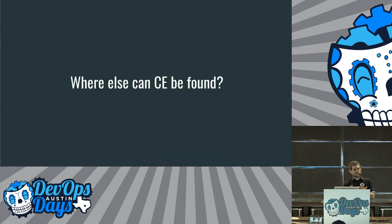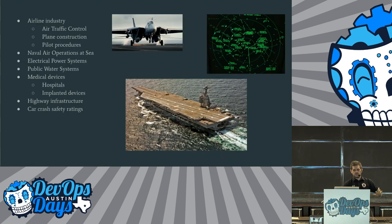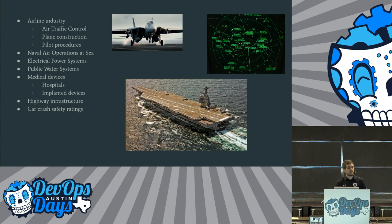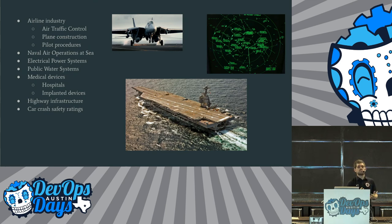Where else can we find chaos engineering beyond the scope of computers? I'm a huge naval aviation fan — landing airplanes on moving boats in combat situations with explosives, and when you're out in the middle of the ocean there's not a divert field, you get on the boat or you don't. Air traffic control in the United States — there are lots of studies and papers on that. Pilot procedures — the Boeing 737 MAX 800 is in the news right now, and chaos engineering could apply in a very significant way.